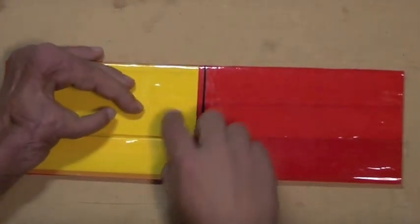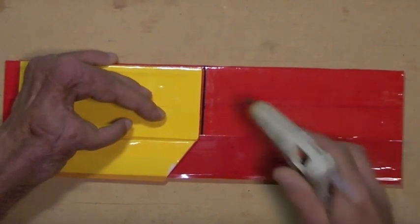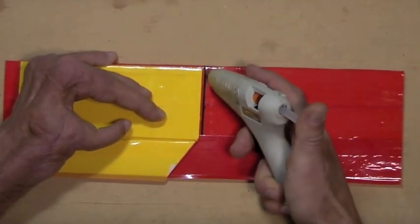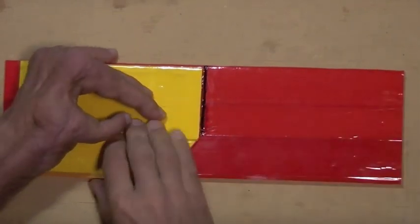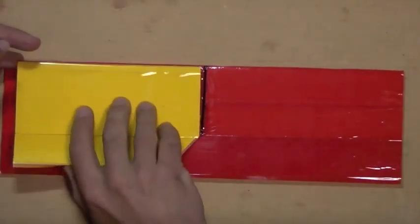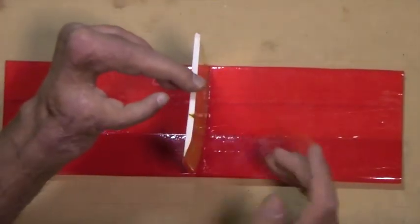And so in using the actual vertical stabilizer as a guide up against this line, I'll just apply a generous bead of hot glue. And then just flip that right up and hold it in place.